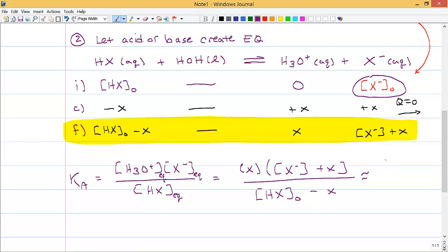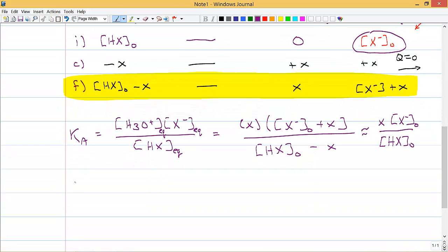So, I can simplify this to get little X times X minus initial divided by HX initial. Okay, fine, that's all great, but let's rearrange this a bit. We got Ka is equal to X times the ratio of the initial concentration of my salt to the initial concentration of my acid. And then I'm going to do something crazy. I'm going to take the log, actually the negative log. So, I'm going to take the negative log of Ka, and I'm going to take the negative log of X.